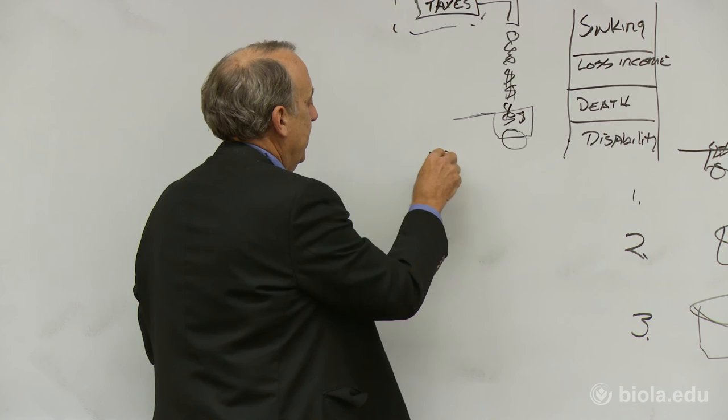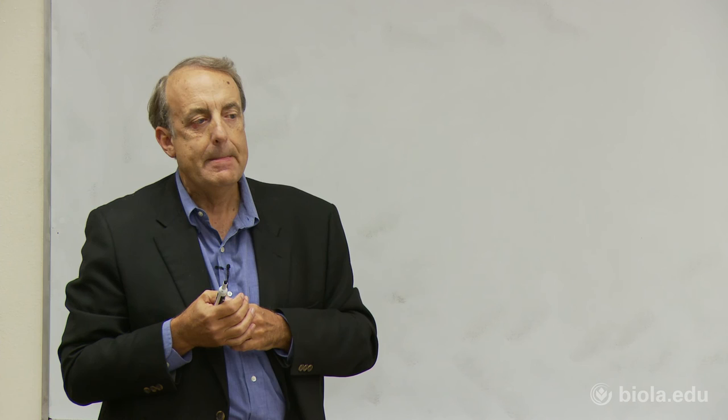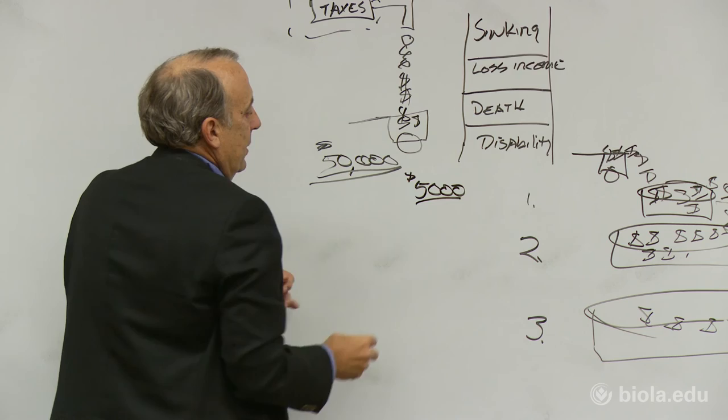You've got to fill up one, then fill up two, then fill up three. If somebody's earning fifty thousand dollars a year, how much realistically should they have in bucket one? How much should they try and build up in bucket one before they start investing in bucket two? What do you think would be a reasonable number? Ten percent, yeah. Ten, fifteen percent, something like that.